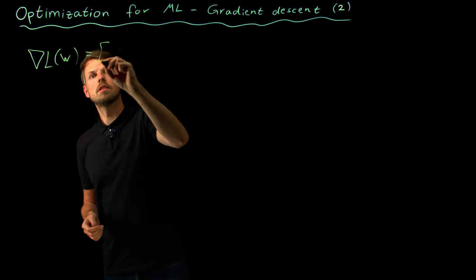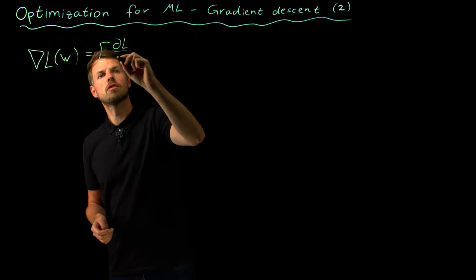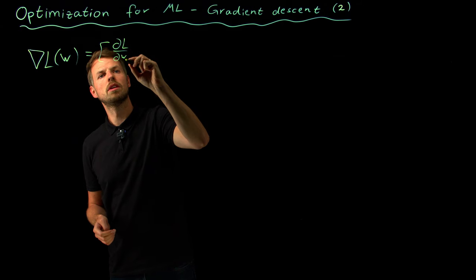We have seen that this is the set of partial derivatives of our loss function with respect to these individual weights.